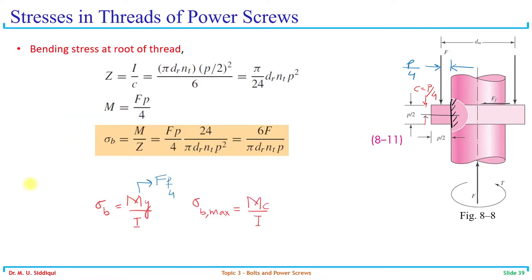This is the exact formula from the book. You need to remember: F is the load, p is the pitch, dr is the root diameter, and nt is the number of threads engaged to bear the load. Application becomes very easy, and when you do an example you will be able to use this formula directly.